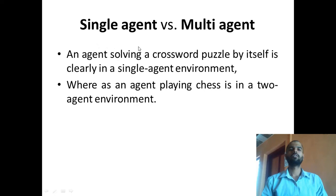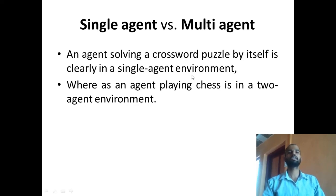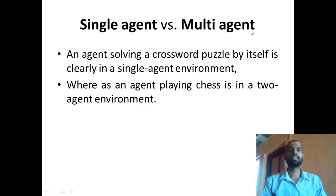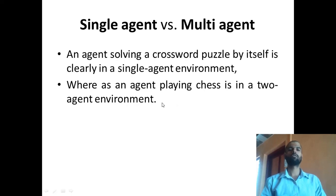Next is single agent versus multi-agent environment. An agent solving a crossword puzzle by itself is clearly a single agent environment. In our previous lecture, we also saw the example of the vacuum cleaner world, which is also an example of a single agent environment. Multi-agent means more than one agent is involved. Playing chess is a two-agent environment. Where one or more agents are required, it is treated as a multi-agent environment.